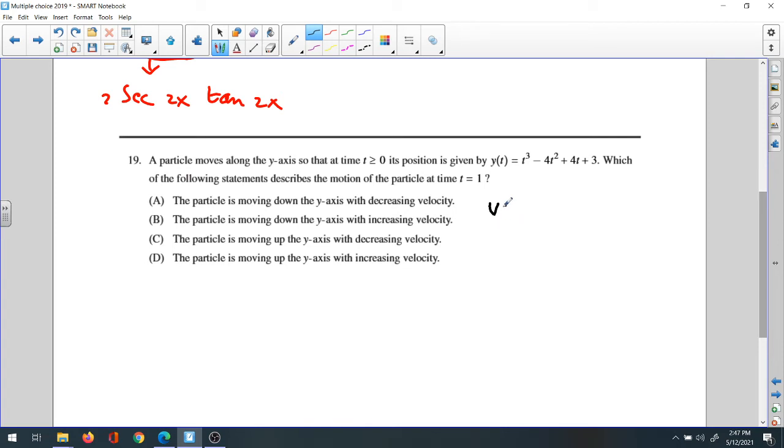The derivative will be 3t² minus 2 times 4t, which is 3t² - 8t. We're going to evaluate that at t = 1. So v(1) will be 3(1)² = 3, minus 8(1) = 8, which equals -5.